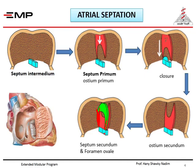Blood has to pass from the right side to the left side throughout intrauterine life. Blood coming from the inferior vena cava to the right atrium pushes the septum primum like a door towards the left side and passes above it to reach the left atrium. As pressure rises inside the left atrium, this door turns back to close the opening, and so forth, until the time of birth where pressure becomes equal in both atria. At that time, the septum secundum and the septum primum fuse together.